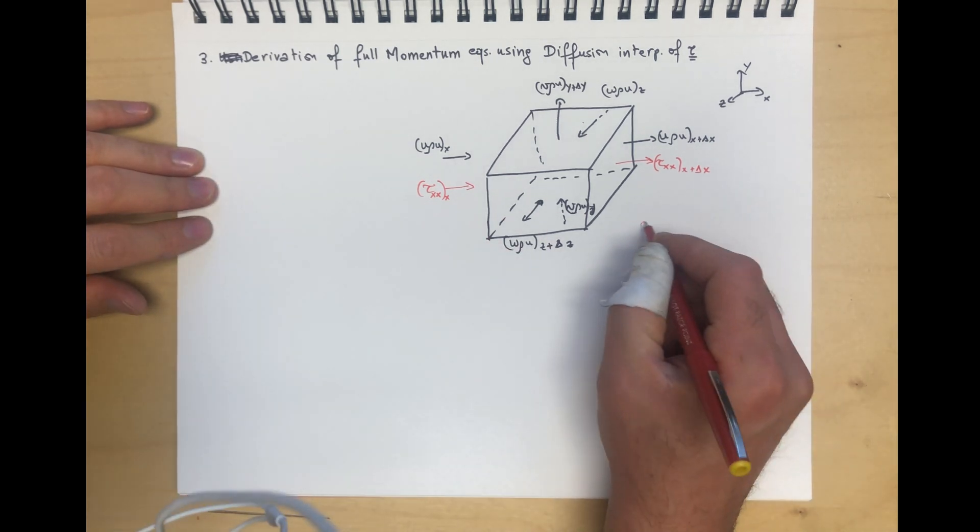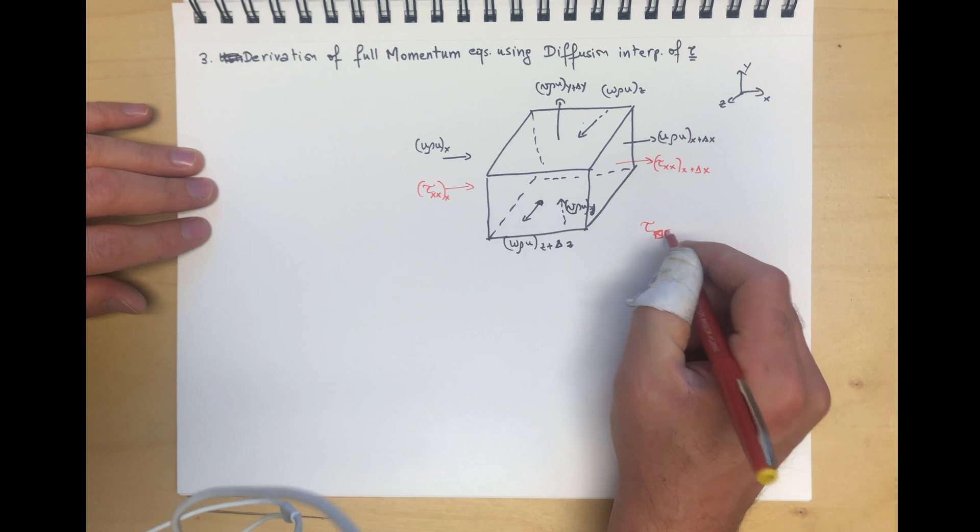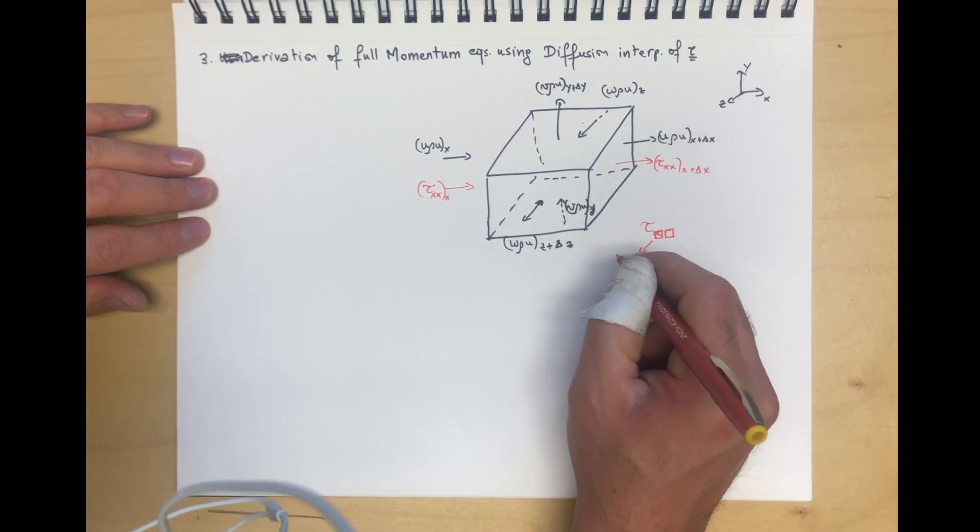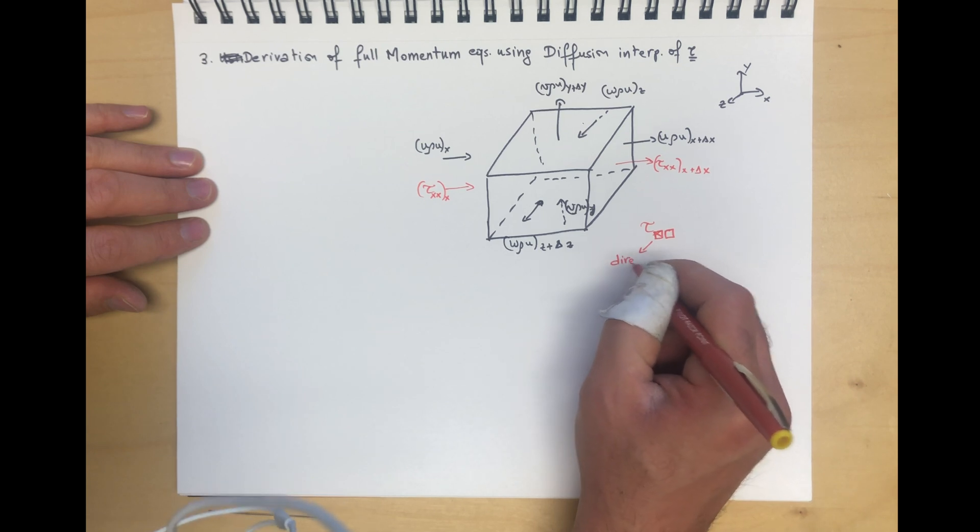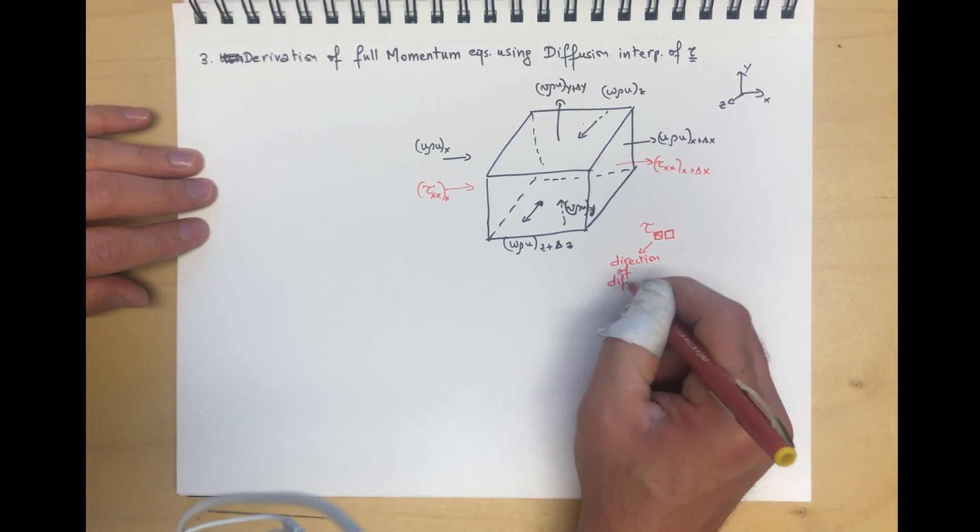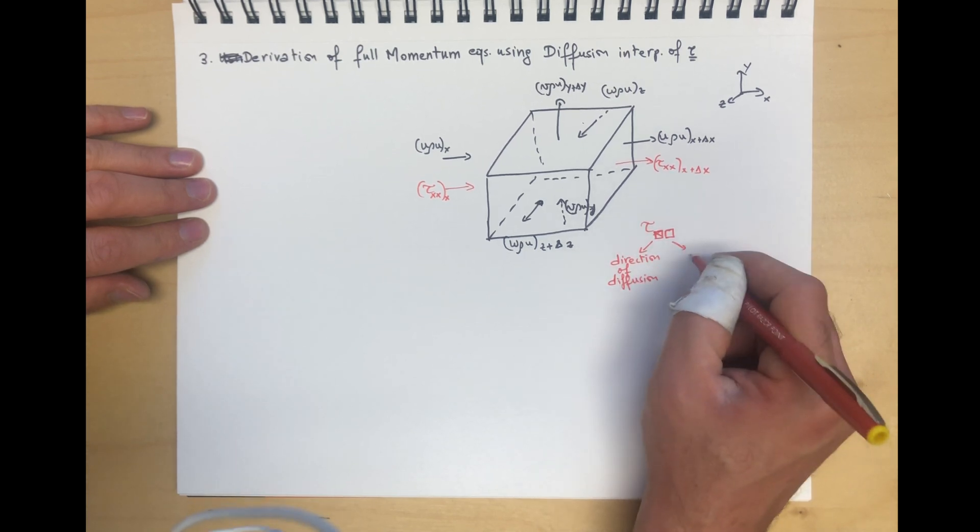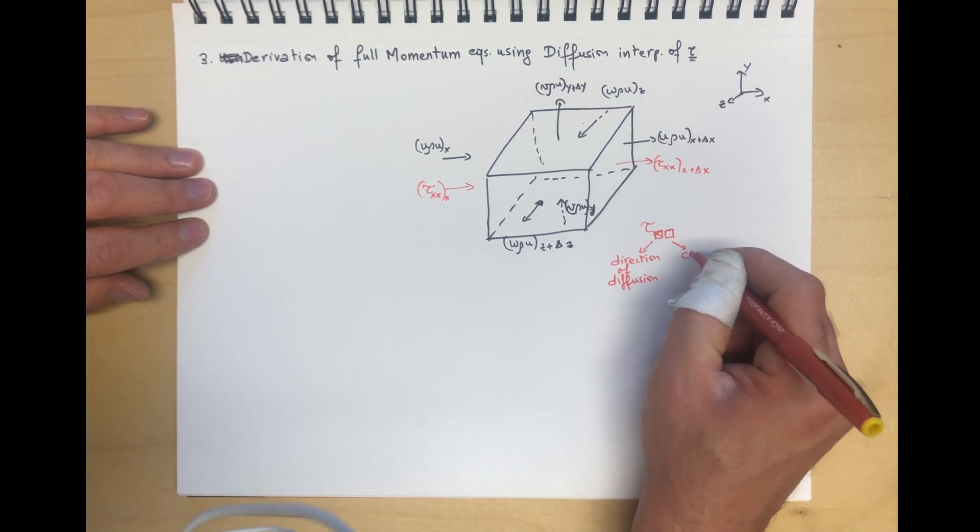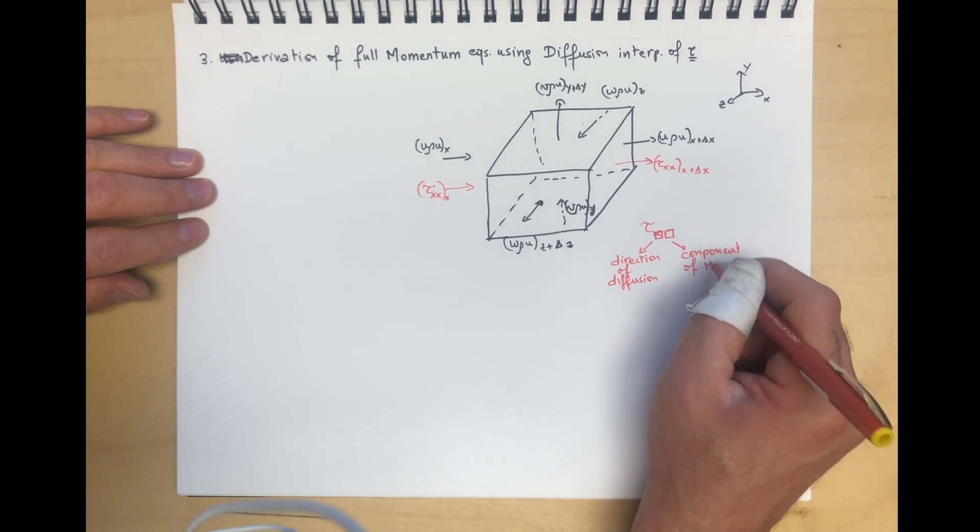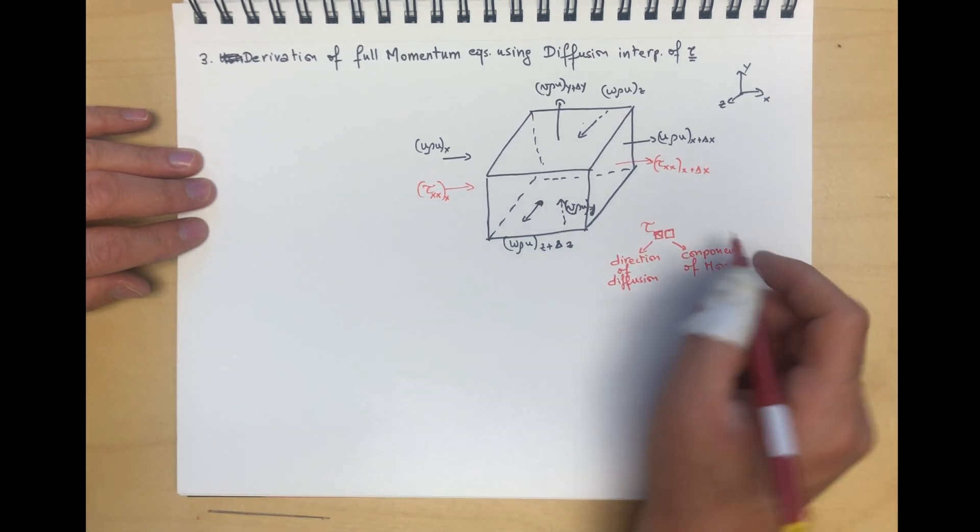We follow the nomenclature τ with two subscripts. The first subscript is the direction of diffusion, and the second subscript is the component of momentum.